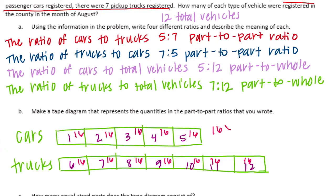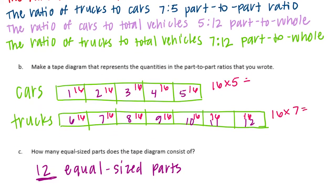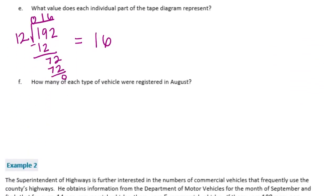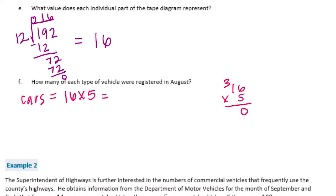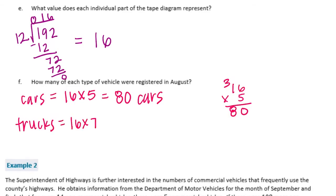So 16 times 5 will give us the total number of cars, and 16 times 7 will give us the total number of trucks. For cars: 16 times 5 — 6 times 5 is 30, carry the 3, 5 times 1 is 5 plus 3 is 8, so there are 80 cars. For trucks: 16 times 7 — 6 times 7 is 42, carry the 4, 7 times 1 is 7 plus 4 is 11, so we have 112 trucks.